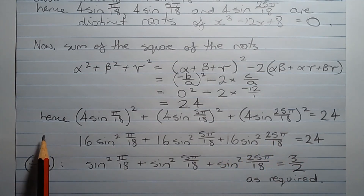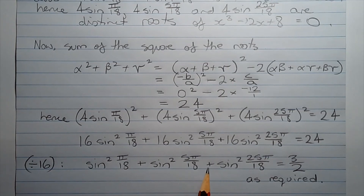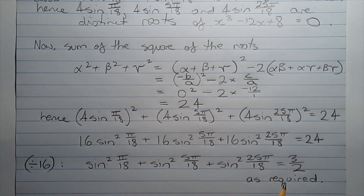Dividing all terms by 16, we get sin squared pi over 18 plus sin squared 5 pi over 18 plus sin squared 25 pi over 18 equals 3 over 2 as required.